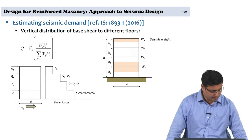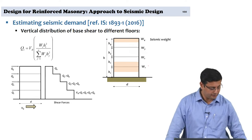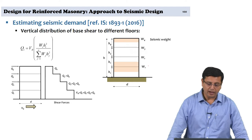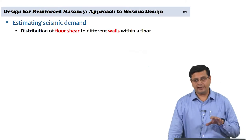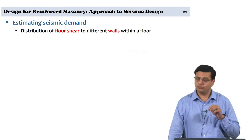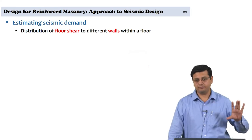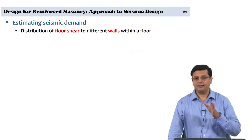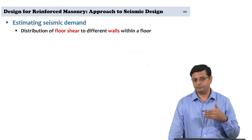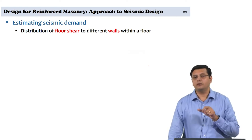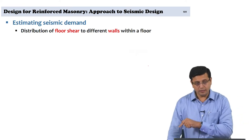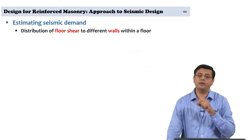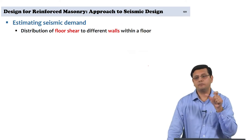Once floor shears are established, our focus shifts to the floor itself. The transition is: total building → floors → walls → piers. Within each wall, the vertical lateral load resisting elements are referred to as piers. The final goal is to establish the shear forces per pier.